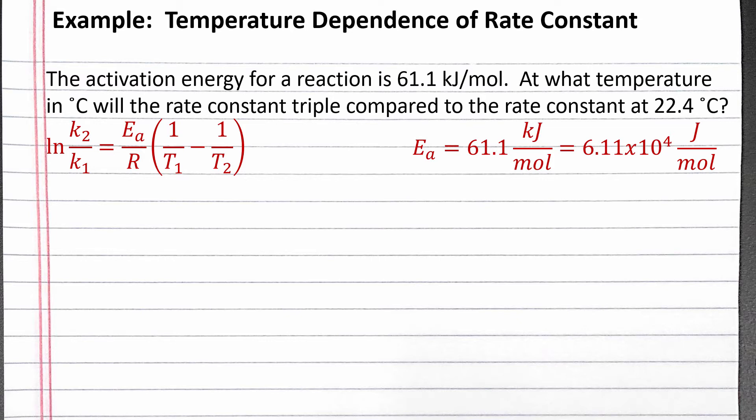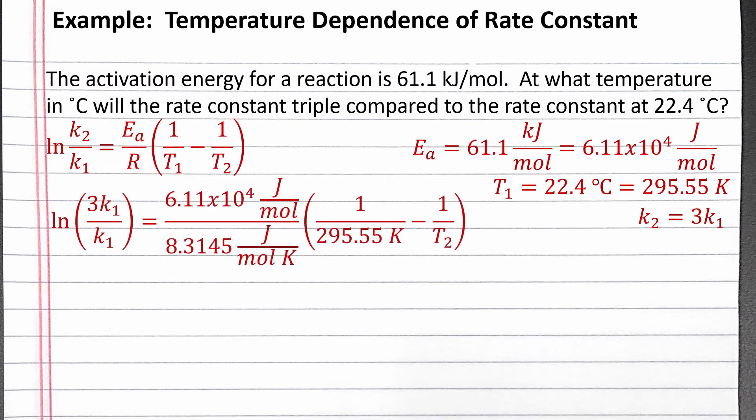We can choose to assign 22.4 degrees Celsius to T1. In this equation, our temperatures need to be in Kelvin, so we add 273.15 to get 295.55 Kelvin. If 22.4 degrees Celsius is T1, then T2 is the temperature at which the rate constant has tripled. This means K2 equals 3 times K1. We can plug these values into our equation and solve for T2.